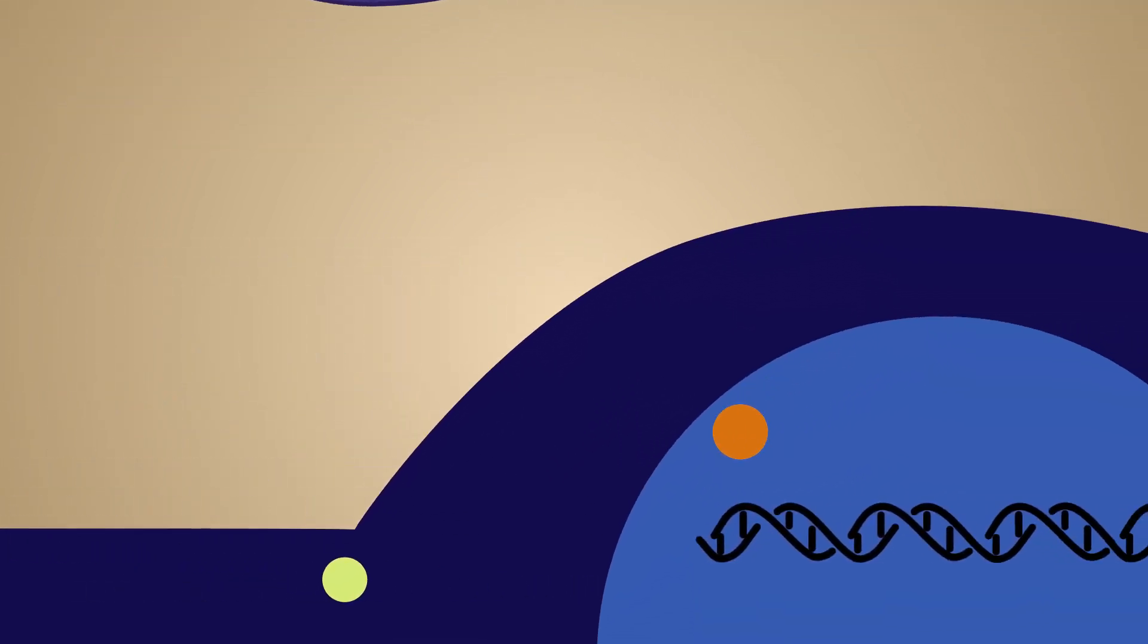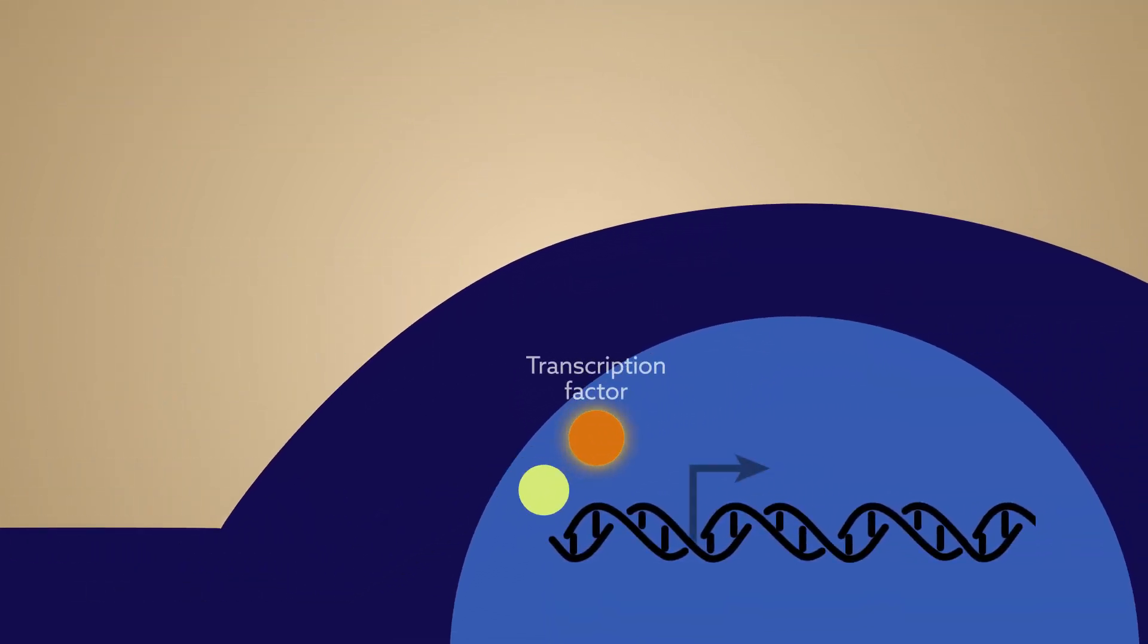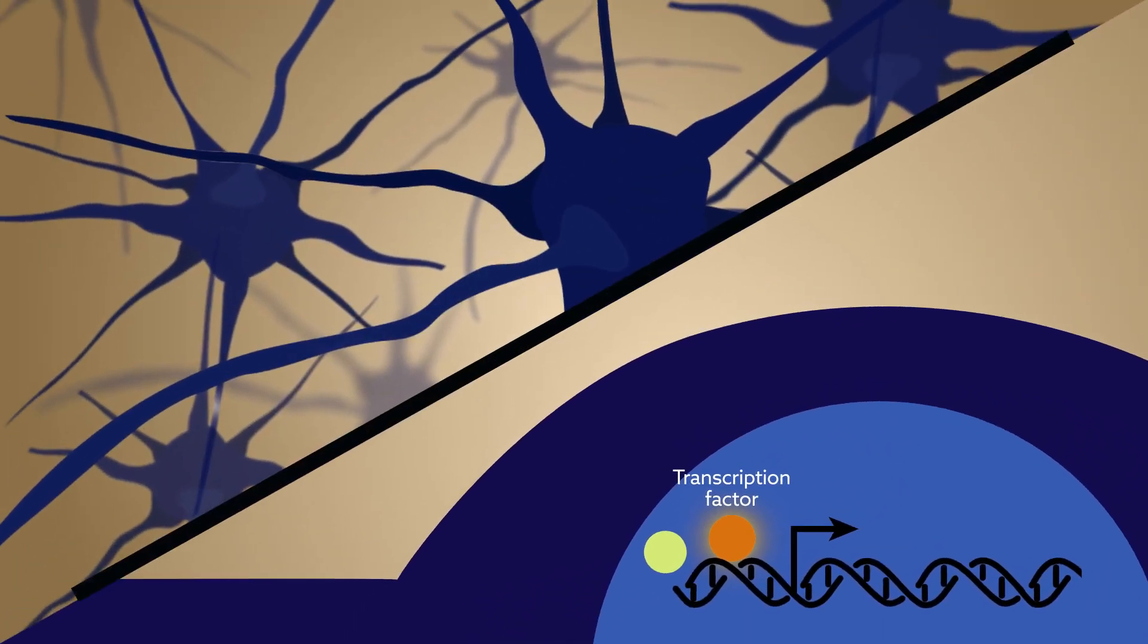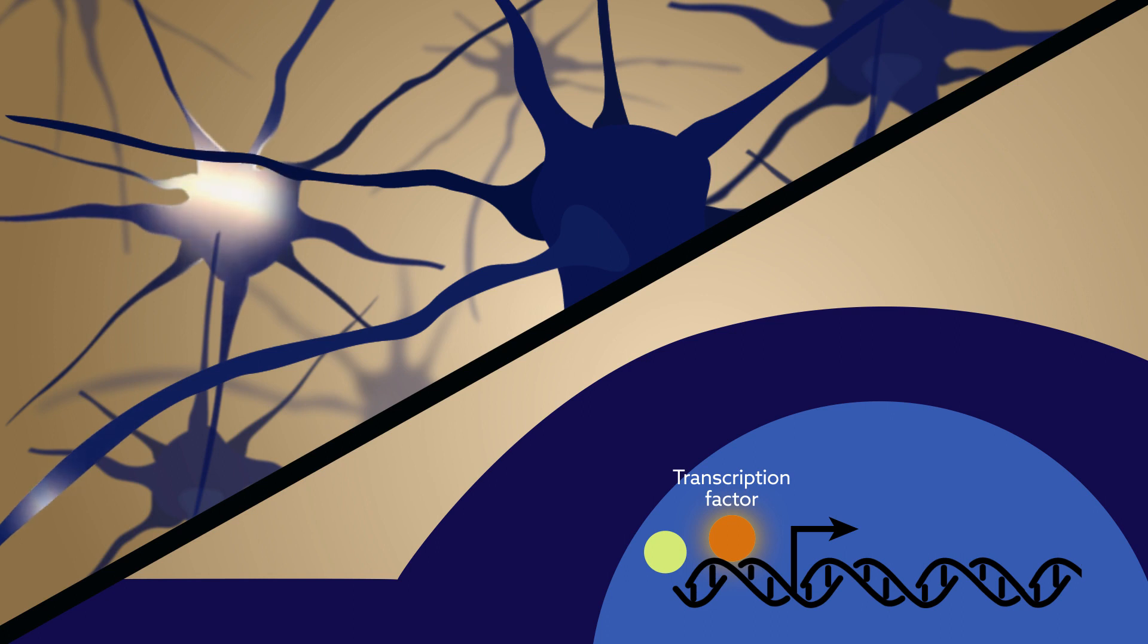These include transcription factors, molecules that control which genes are expressed at a given time. Tracking how transcription factors correlate with neuronal activity patterns during learning is therefore one way to understand plasticity.